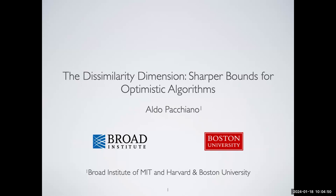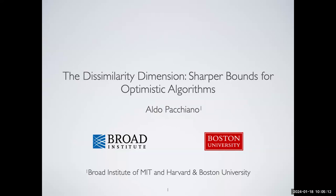Otto is an assistant professor at Boston University Center for Computing and Data Sciences. He obtained his PhD with Mike Jordan and Peter Bartlett at UC Berkeley. That's where Otto and I first met, and to this day, Otto has still been perhaps the most creative student, coming up with problems and creative ways to solve them.